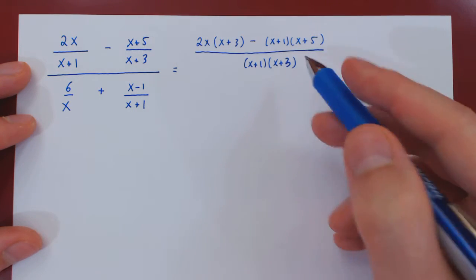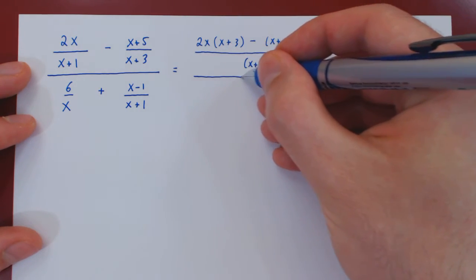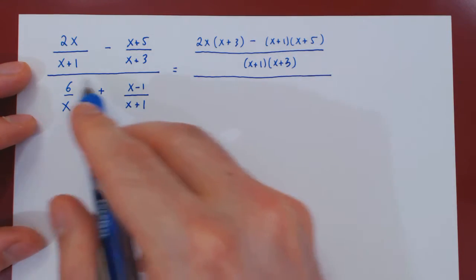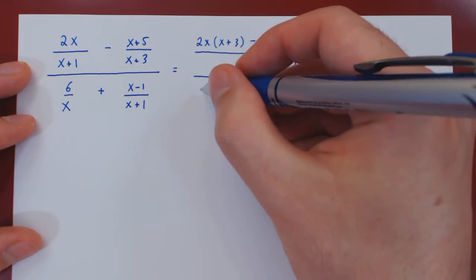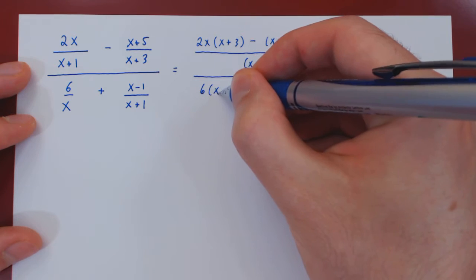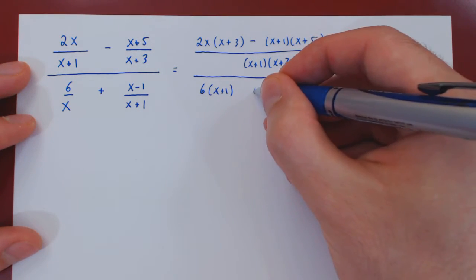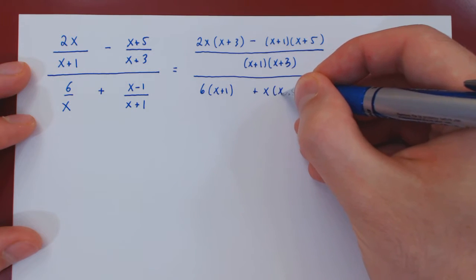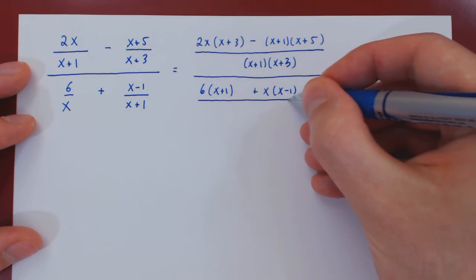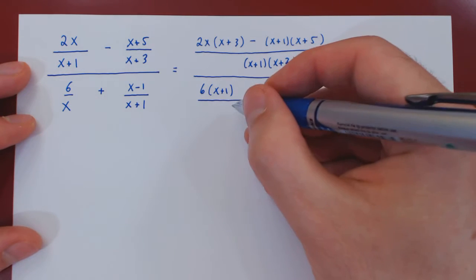So, this is for the numerator, all over, and now we repeat for the denominator, 6 times (x + 1) plus x times (x - 1), and divided by x times (x + 1).